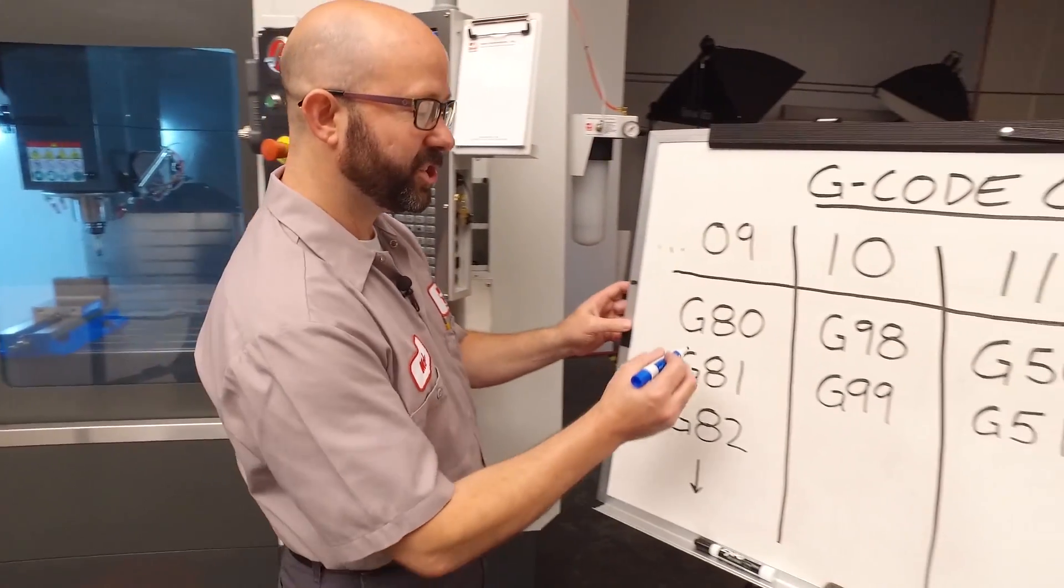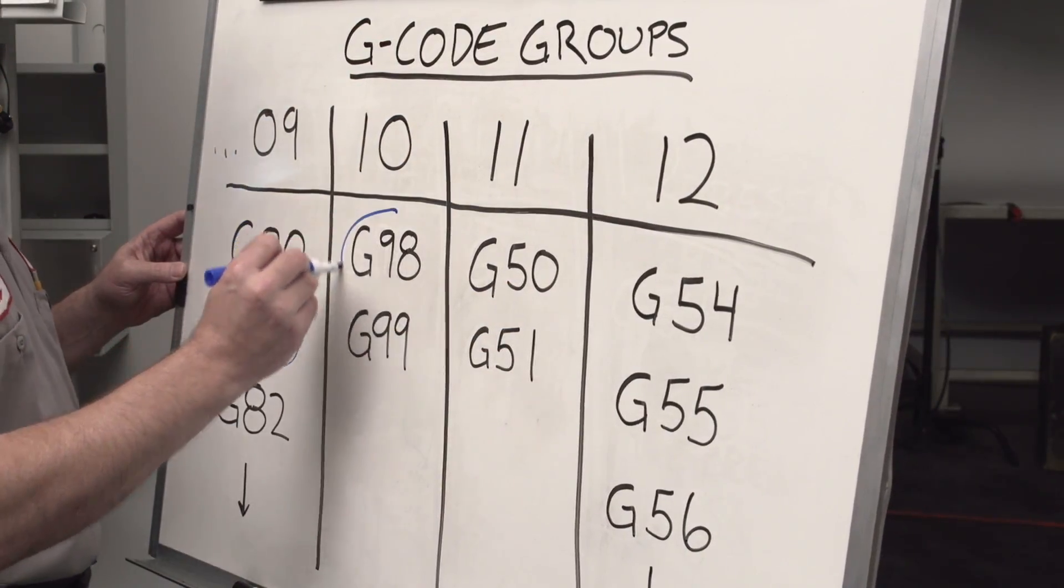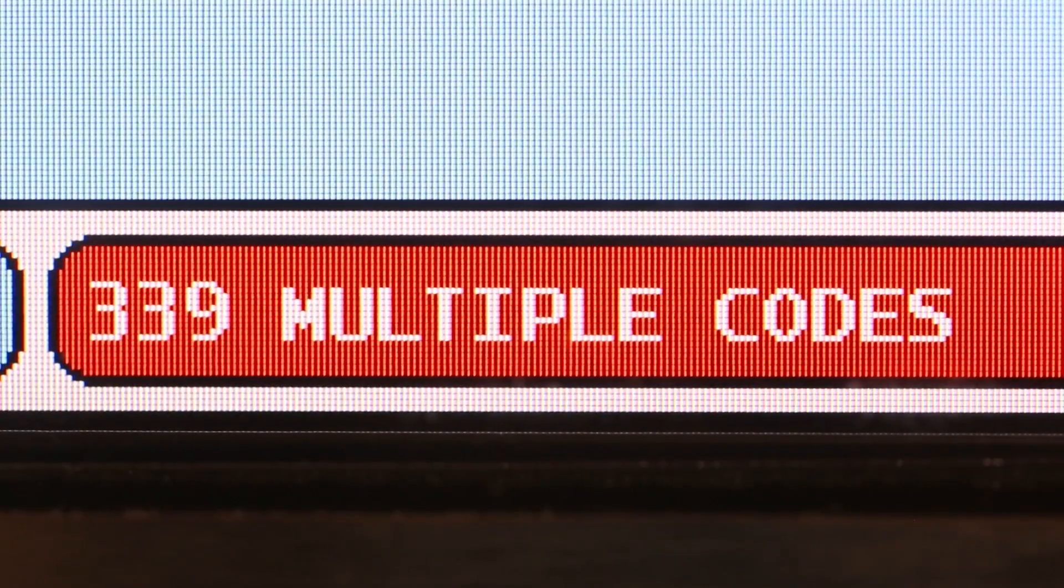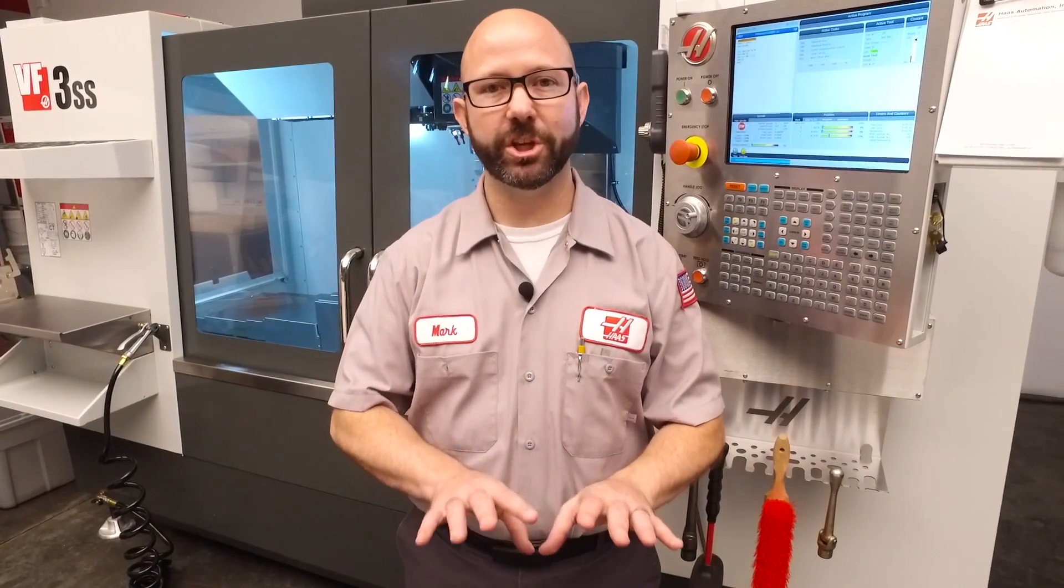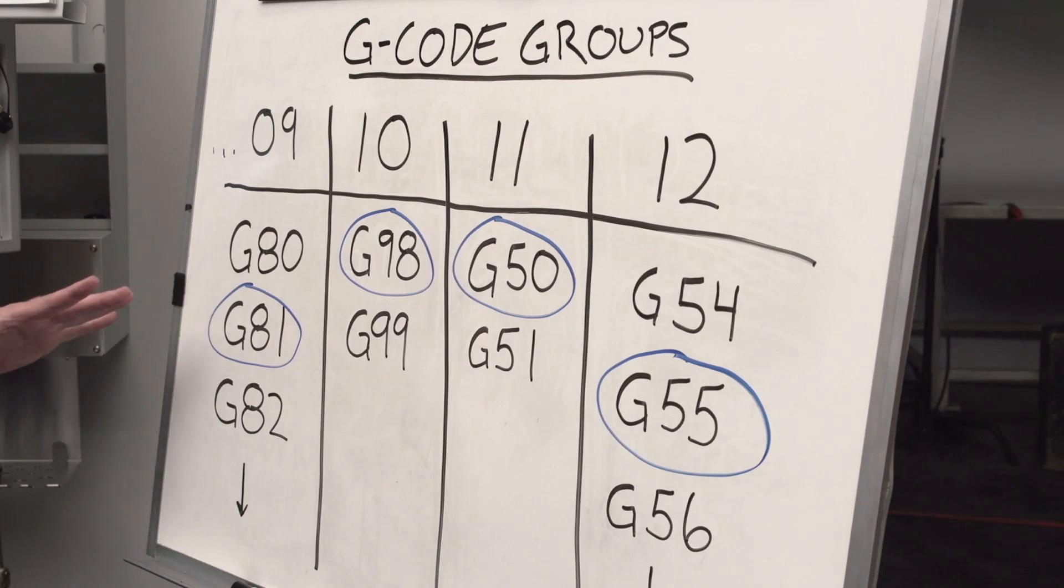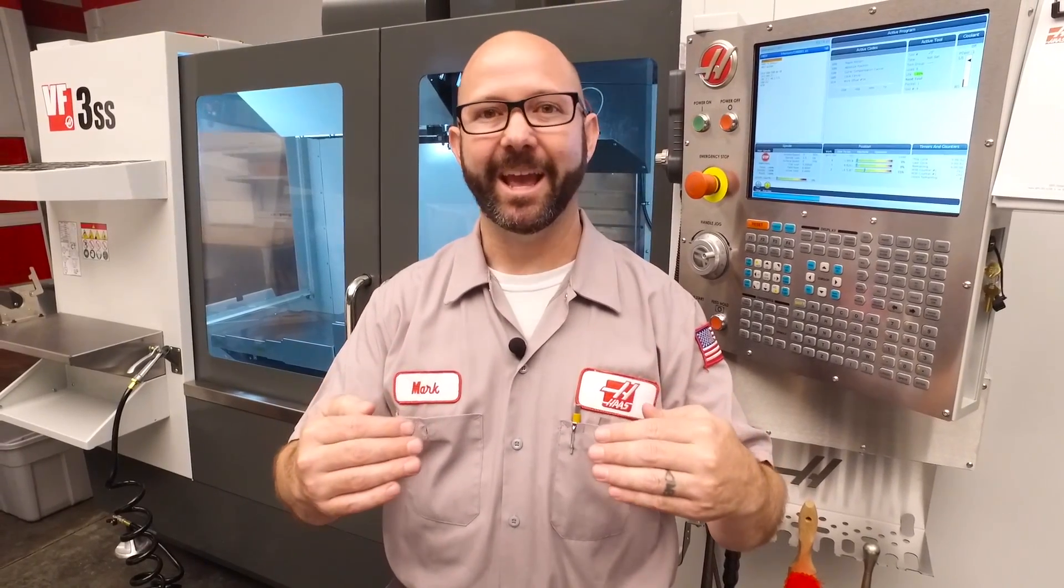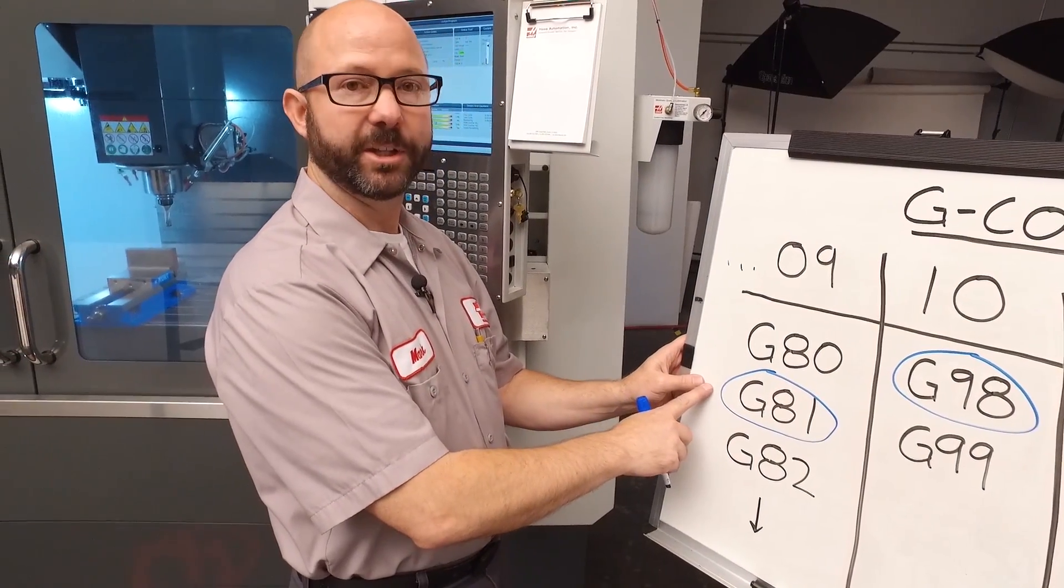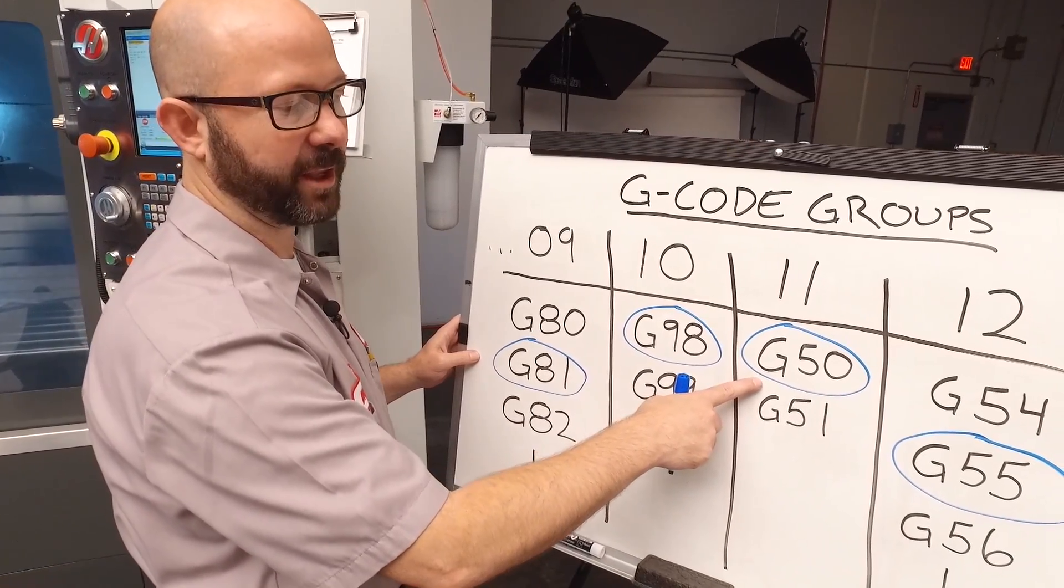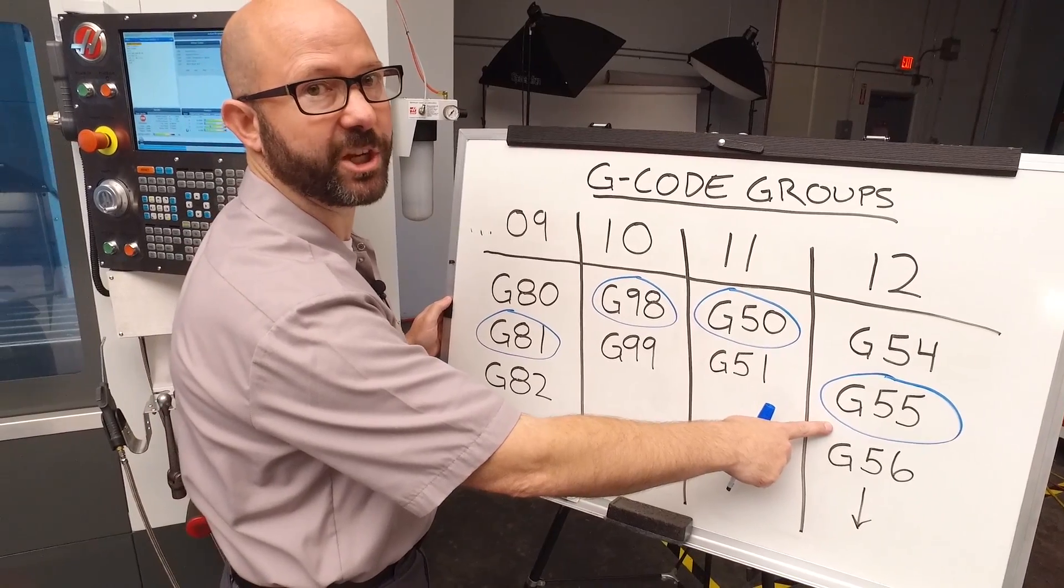Now when writing a CNC program, I can choose at most one G-code from each group. If I try and select more than one G-code from each group, I'm gonna get an alarm. Now the reason that we have G-code groups is to divide up mutually exclusive G-codes. We can't drill and tap at the exact same time. So if you were to call up a G-81 and a G-84 on the same line of code, you'd get an alarm. Now I've circled a G-81 to drill using a G-98 clearance plane. We've turned off scaling and we're gonna use work offset G-55.